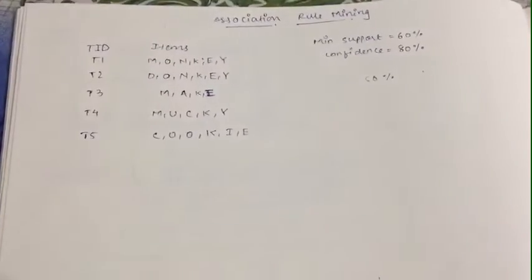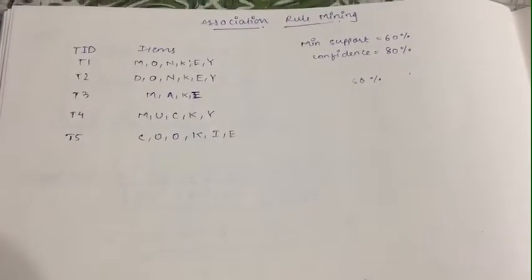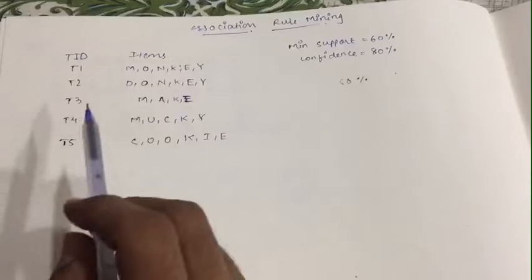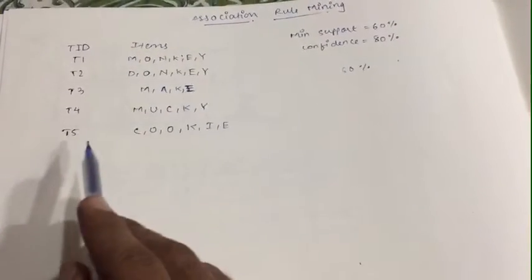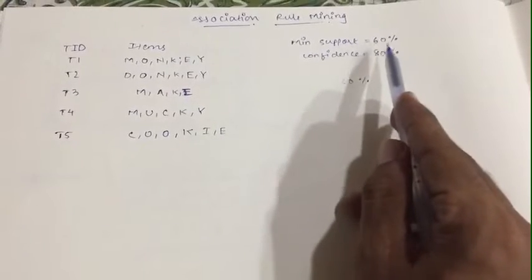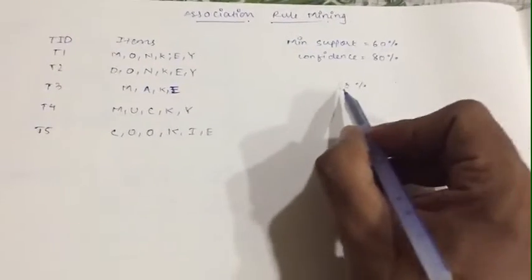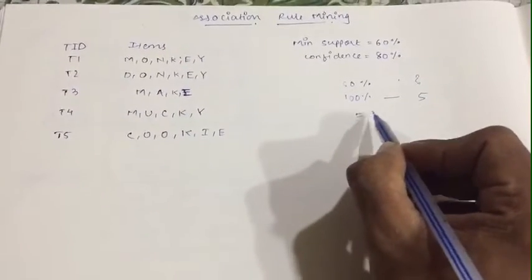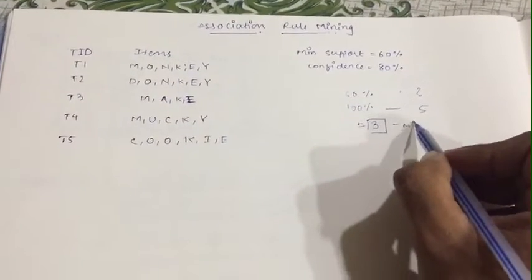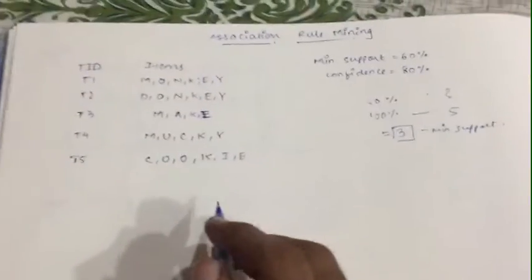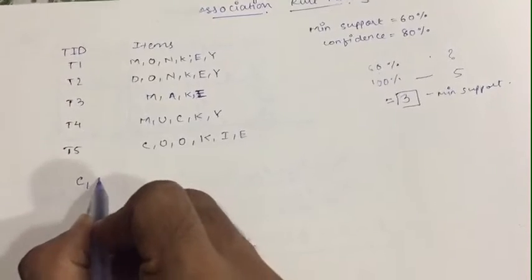Hello friends, welcome. In this tutorial you will learn about association rule mining. You will be given transaction IDs: T1, T2, T3, T4, T5 with items M, K, O, E, Y. You will be given support and confidence. First you have to convert 60% into value form. If the number of transactions is 5, then 60% of 5 equals 3. So our minimum support is 3.